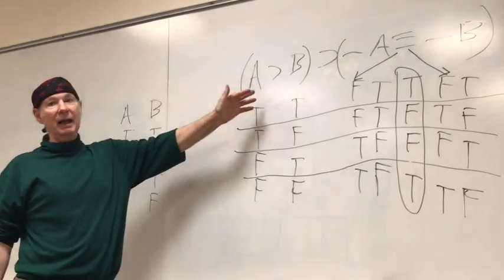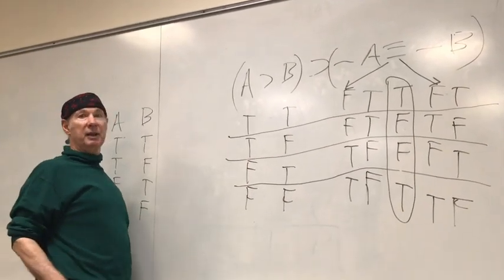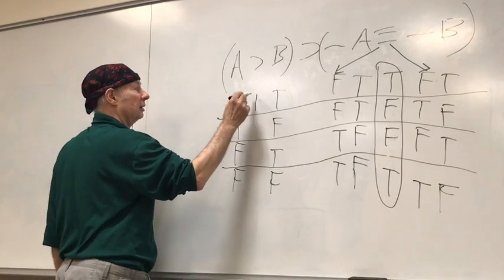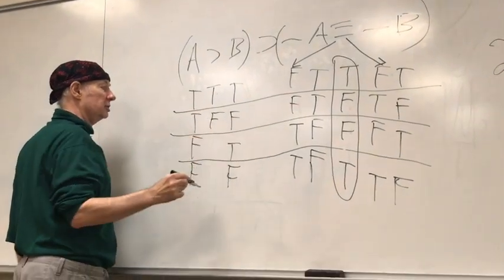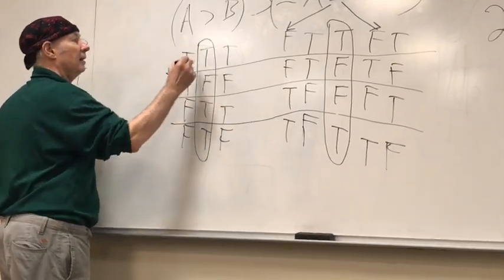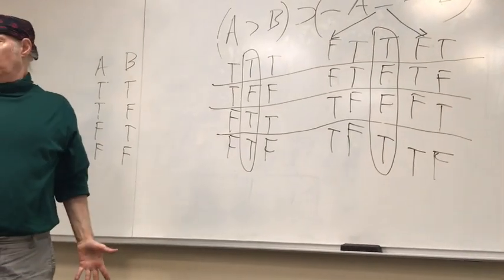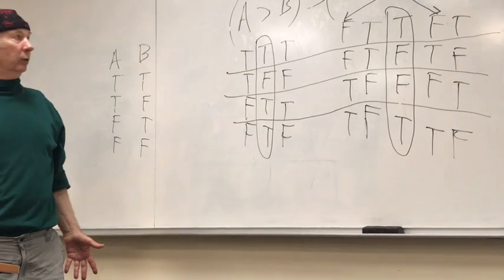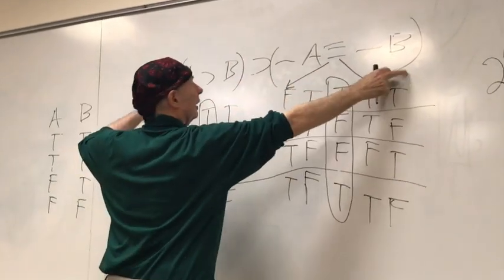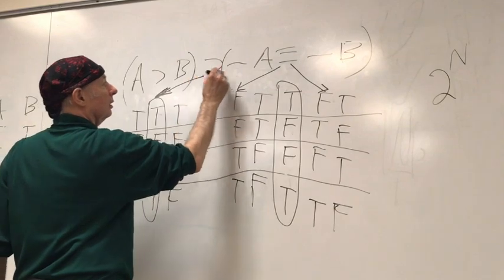Now let's look at the other component to the left of the main horseshoe. We can simply read off the truth table for the horseshoe: T horseshoe T, T horseshoe F, F horseshoe T, F horseshoe F. This column tells us the truth value of the component A horseshoe B. And now we're almost finished — the last thing we need to do is fill in the column underneath the main horseshoe that gives us the entire WFF, horseshoeing that column to that column.